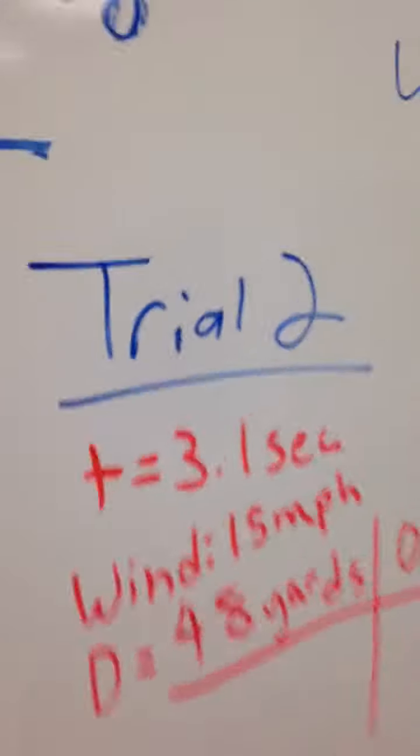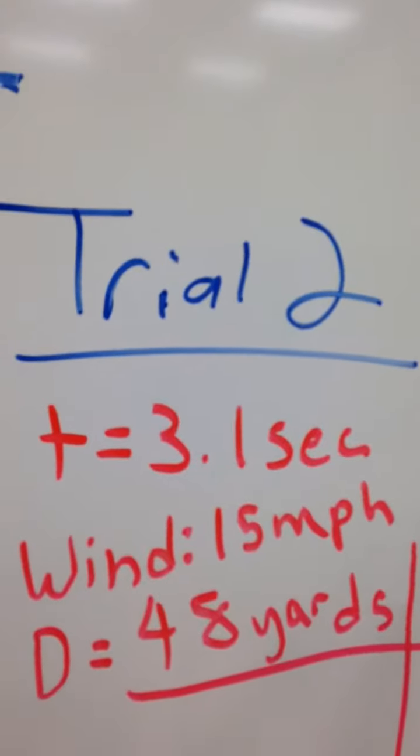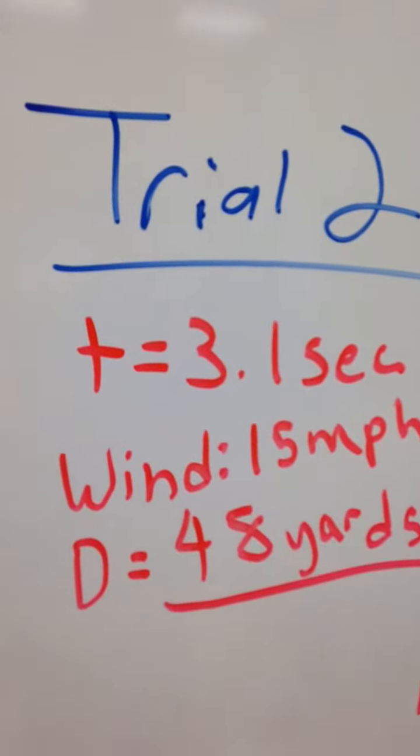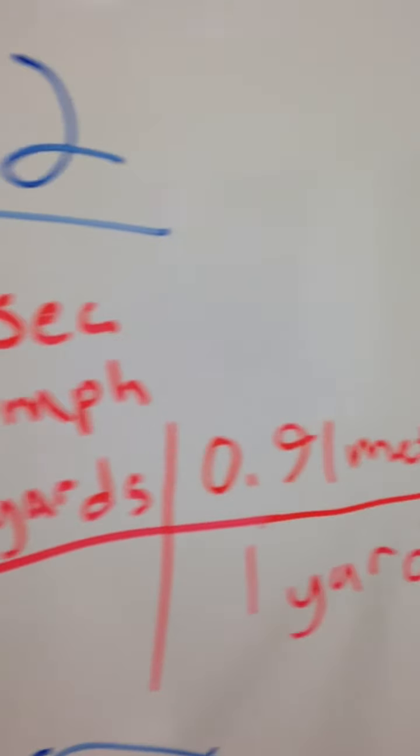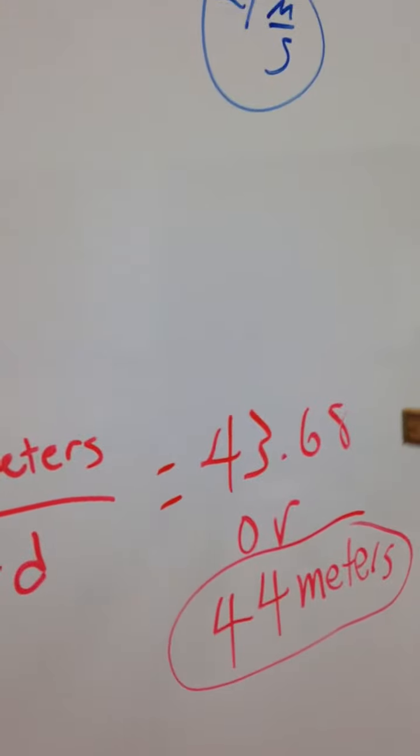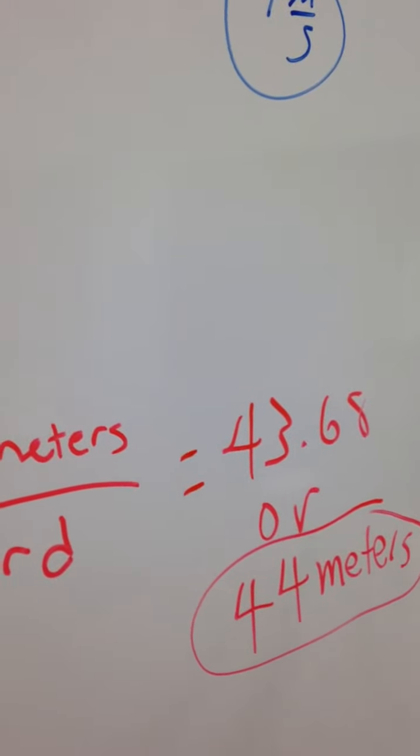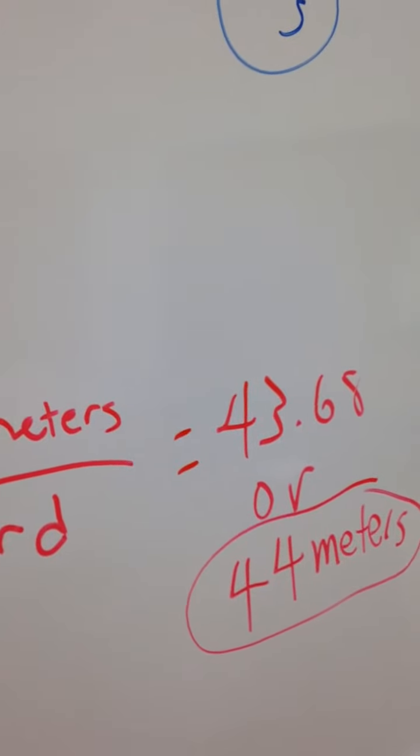On trial 2, T equals 3.1 seconds. Wind, again. Distance, 48 yards. Conversion equals 43.68. With significant figures, 44 meters.